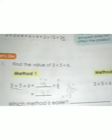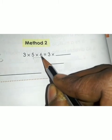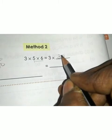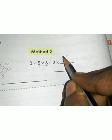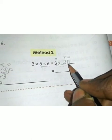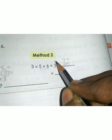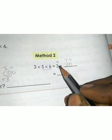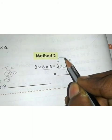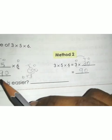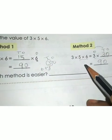Now method 2 for the same problem: 3 × 5 × 6. Consider the last 2 values: 5 × 6 = 30. In 30, the 1's place value is 0 and the 10's place value is 3. Now multiply 3 (the single digit) by the 1's place: 3 × 0 = 0. Then by the 10's place: 3 × 3 = 9. So the answer is 90. Both methods give the answer as 90.